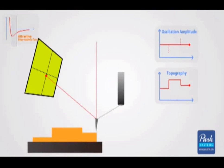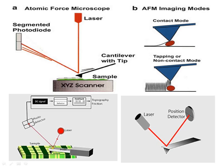An Atomic Force Microscope (AFM) is a powerful tool that enables you to see, explore, and obtain measurement data from your samples at the nanoscale. The figures show AFM image modes such as contact mode and non-contact mode, a schematic illustrating the laser and position detector, and the photo detector, laser, and probe arrangement.